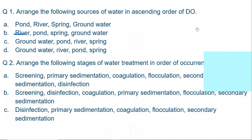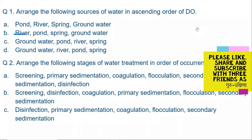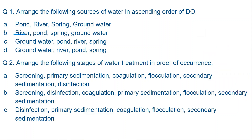Question number one: Arrange the following sources of water in ascending order of DO — that is, small to large. So which source has the smallest DO? We know that the smallest DO is in groundwater, because groundwater is below the earth and there is no mixing of oxygen — no supply of oxygen in groundwater.